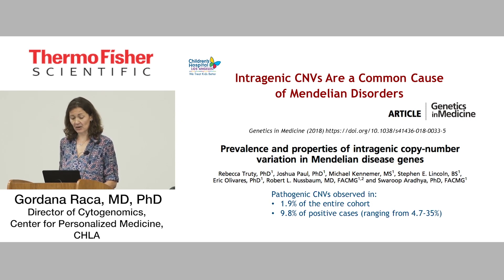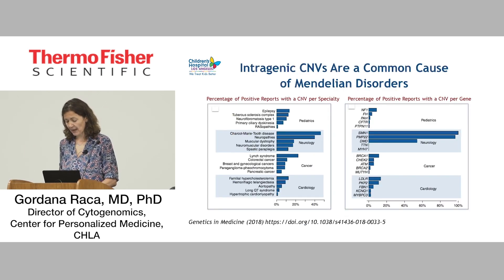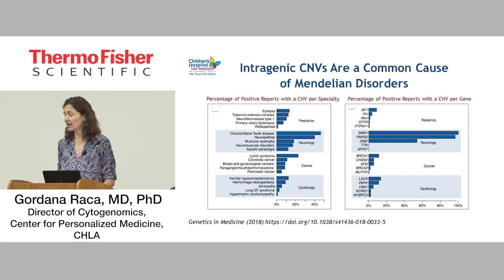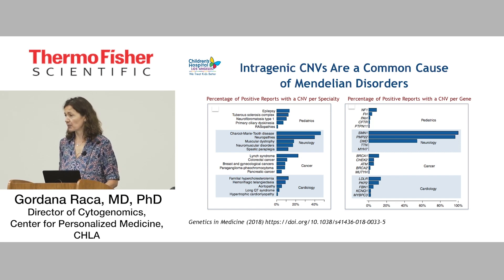When you look at positive cases, almost 10% of all positive cases were positive because there was a pathogenic deletion or duplication, and that ranged anywhere between almost 5% to 35%. They also broke the cohort depending on the reason for referral, and it turns out that with some types of diseases, copy number abnormalities in tested genes were a very significant disease cause. If you look at neurological disorders or cancer predisposition diseases, there is a very high proportion of cases that were positive because of a partial gene deletion or duplication.